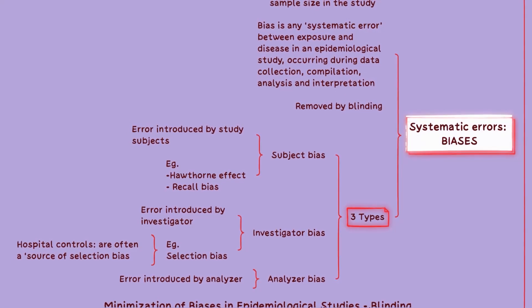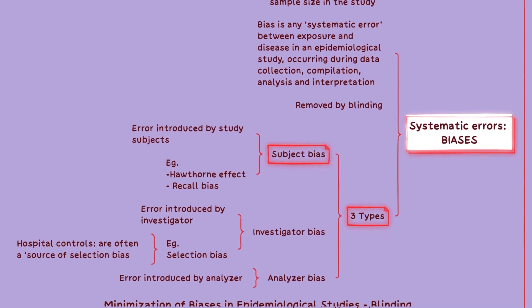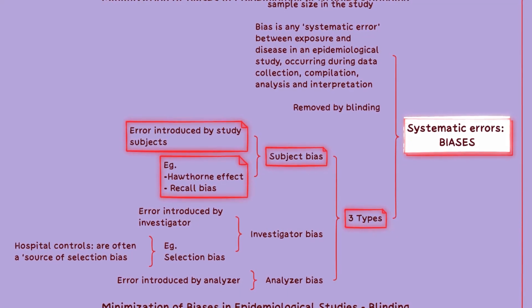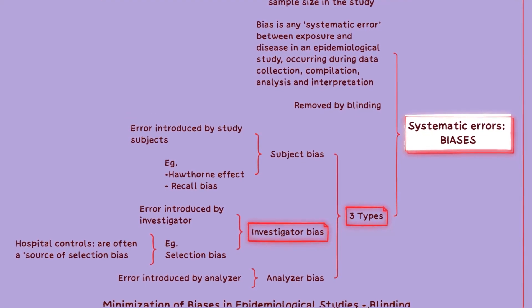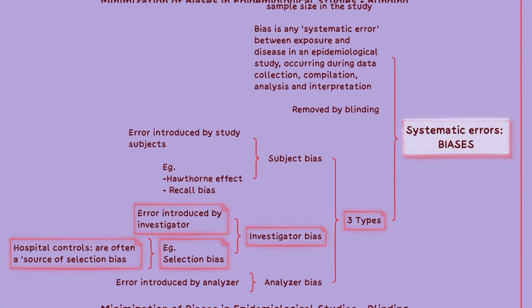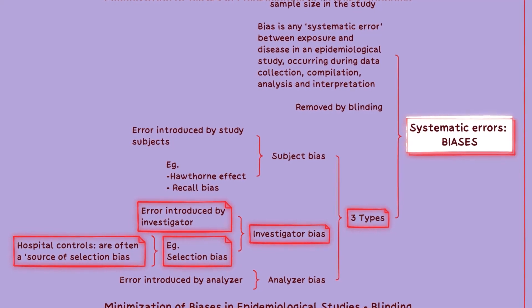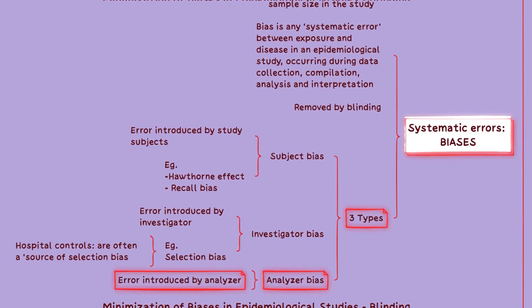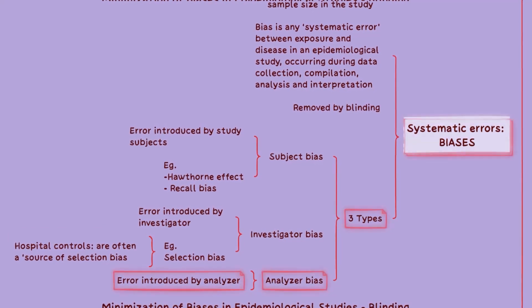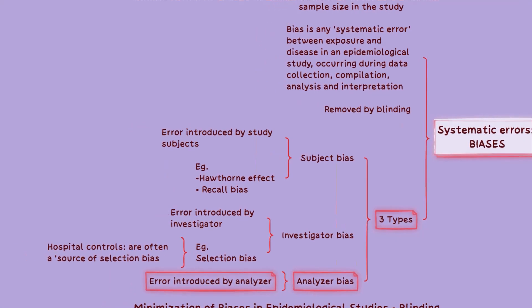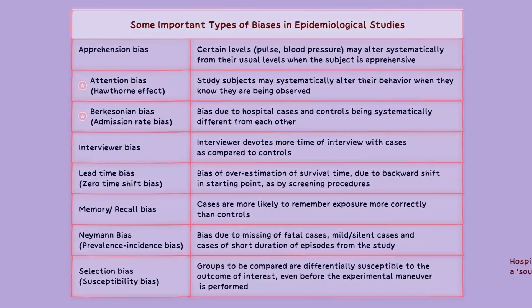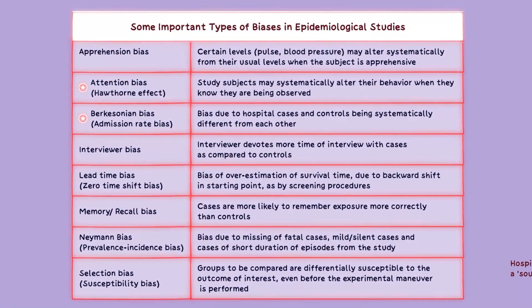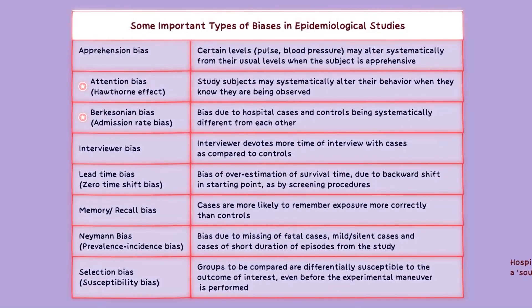Systematic errors are of three types. Subject bias is the error introduced by study subjects, such as the Hawthorne effect or recall bias. Investigator bias involves errors introduced by the investigator, such as selection bias. Lastly, analyzer bias refers to errors introduced during data analysis or interpretation. Some important types of biases in epidemiological studies are listed in the table — you can pause the video here and make a note of these, as they can be important MCQ questions.